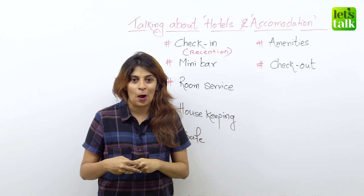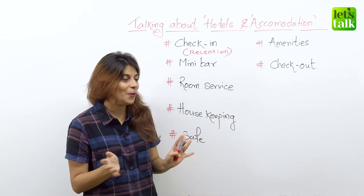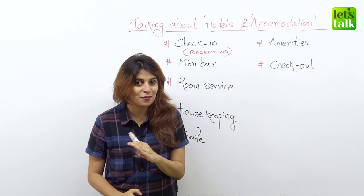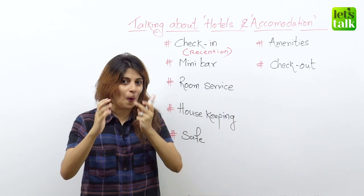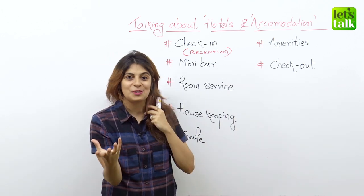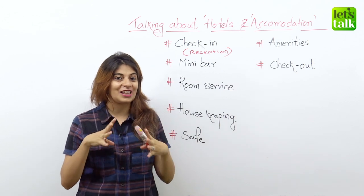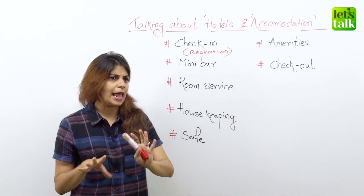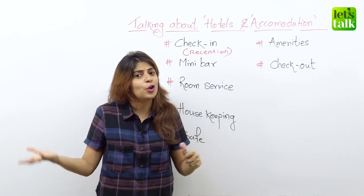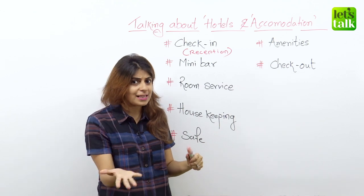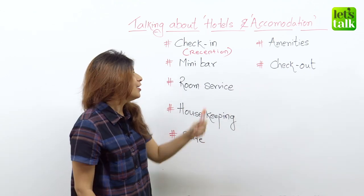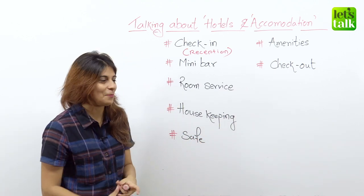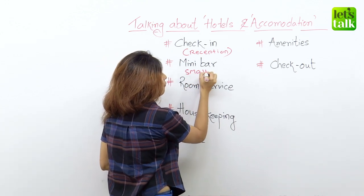Then we have mini bar. When you go to your hotel room, you may spot a mini bar. A mini bar is a small refrigerator with tiny bottles of alcohol and some snacks as well. Make sure you look at the rate card before using these bottles or snacks because they are quite expensive — the hotel rates are much higher than what you'd pay at a grocery store. So be careful before using stuff from the mini bar.